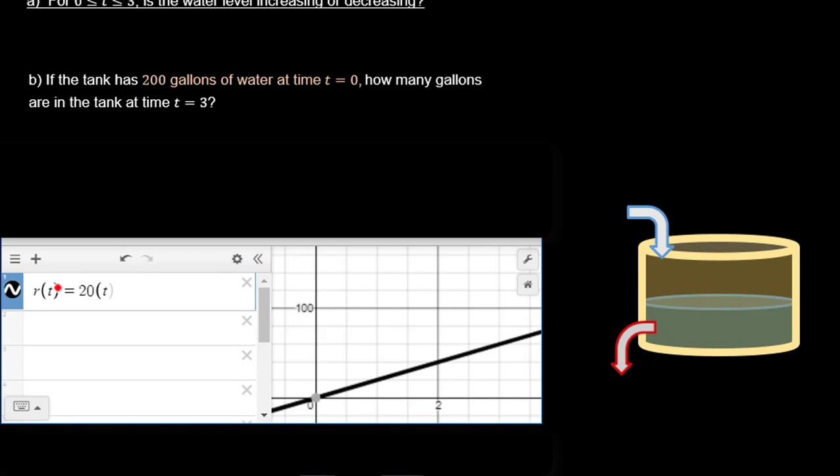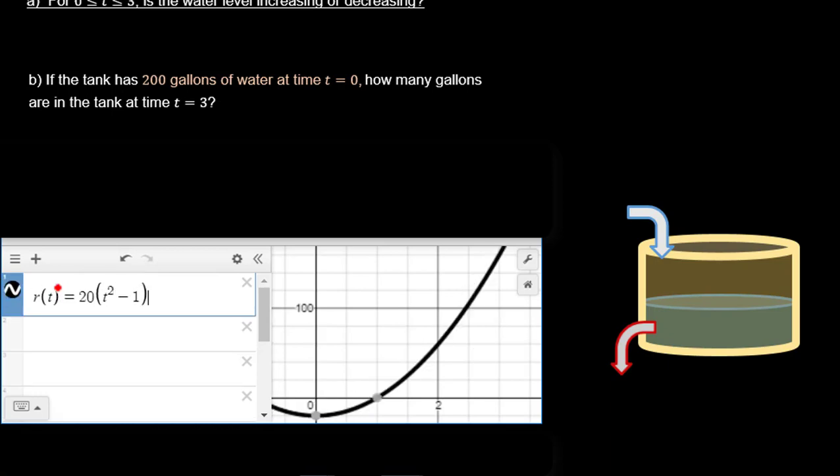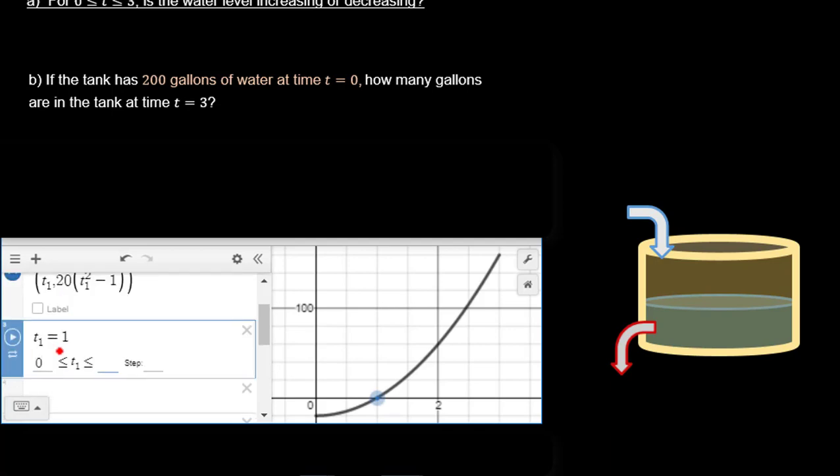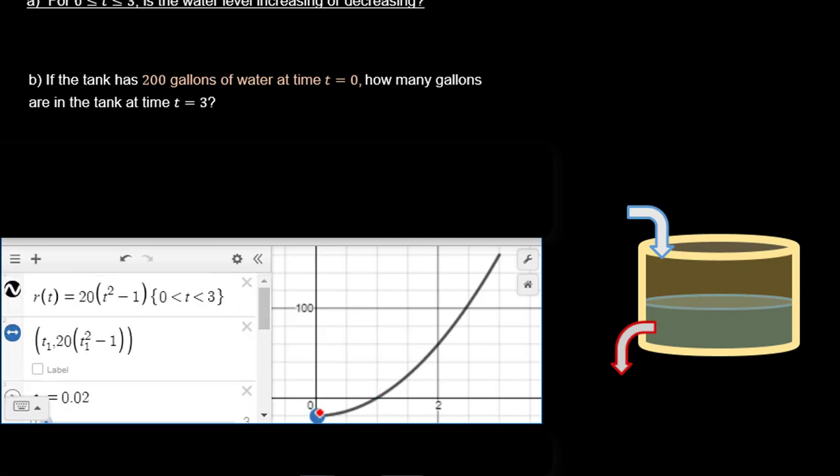So let's go ahead and bring in Desmos and let's go ahead and plot this out to kind of get an idea of what we're working with here. So we'll go ahead and type in our function. And we're going to define the domain here also in these brackets as between 0 and 3. So you can see that pull up on the graph here. But before we go too much further, let's go ahead and make a point that we can move around on that graph. Now to make this point movable, we can go ahead and add this slider here for T1. And we can go ahead and define it as between 0 and 3.